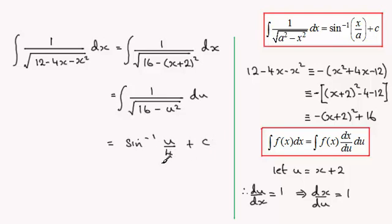And I can substitute back for u. u remember was x plus 2. So we've got the inverse sine of x plus 2 all divided by 4, and then plus the constant of integration c.